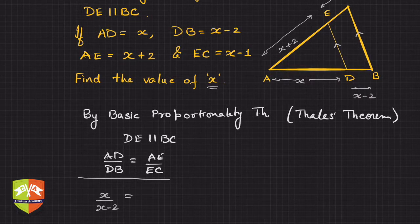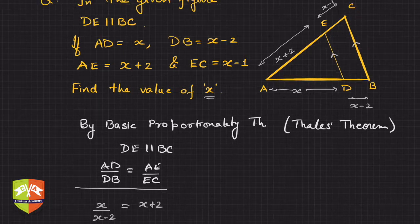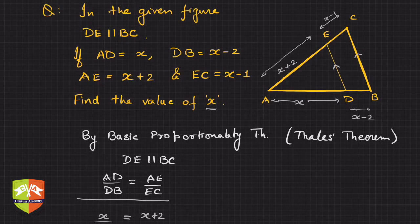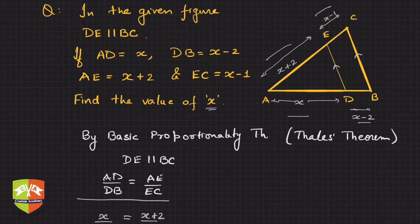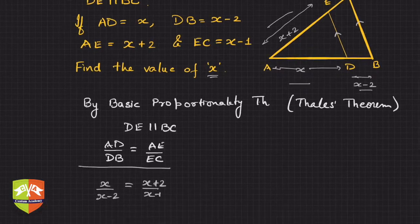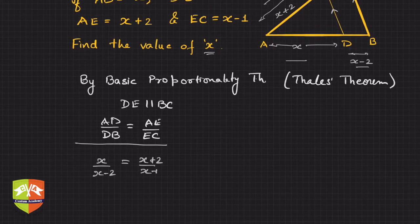AE is x plus 2, and EC is x minus 1. So the equation is x over (x minus 2) equals (x plus 2) over (x minus 1). Just to check: AD upon DB is equal to AE upon EC — and that's exactly what we wrote.